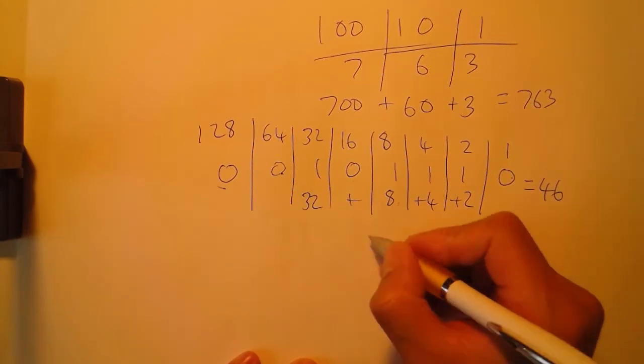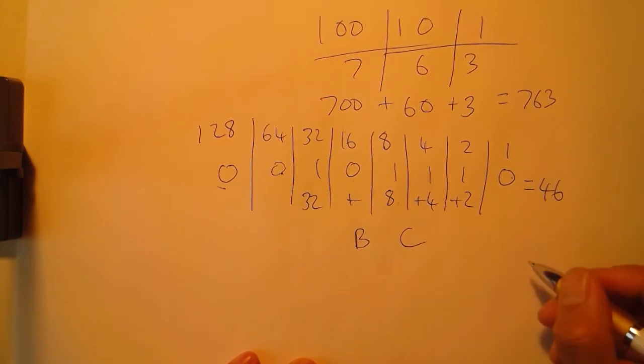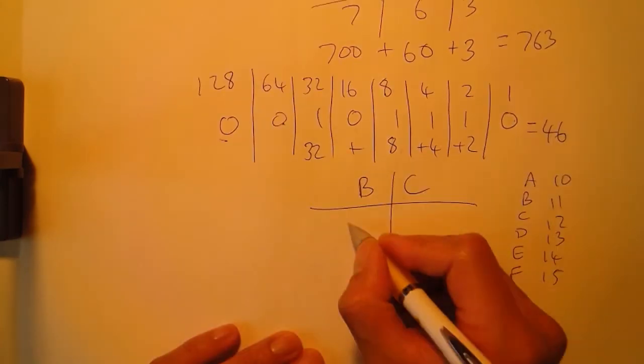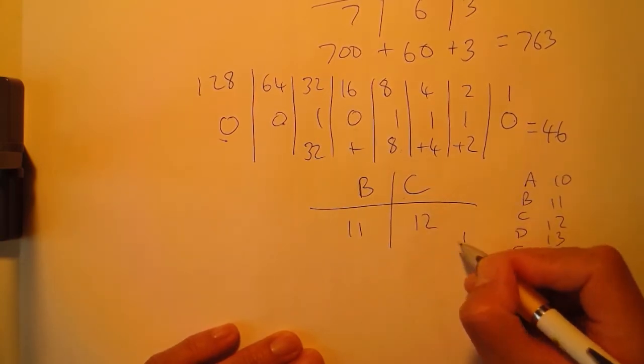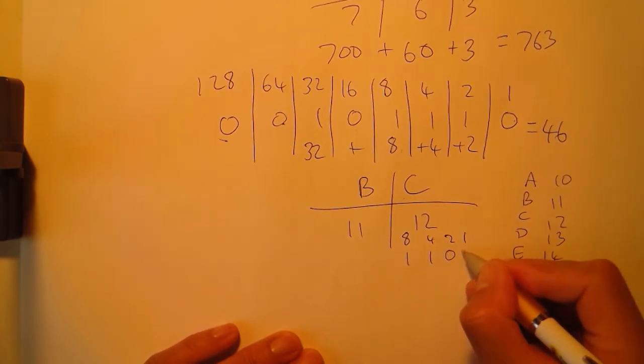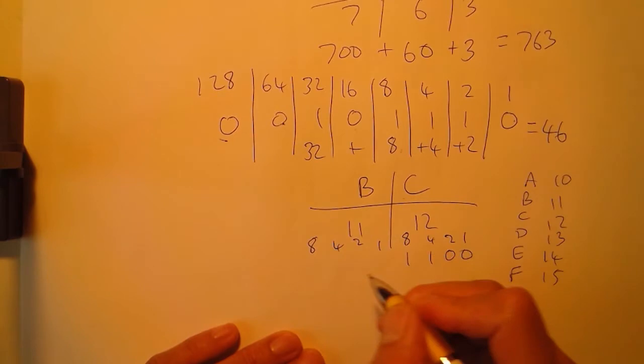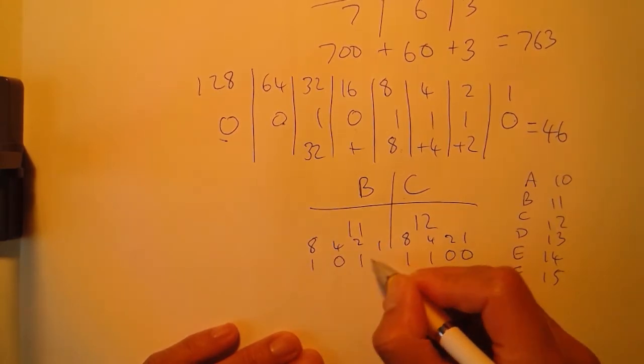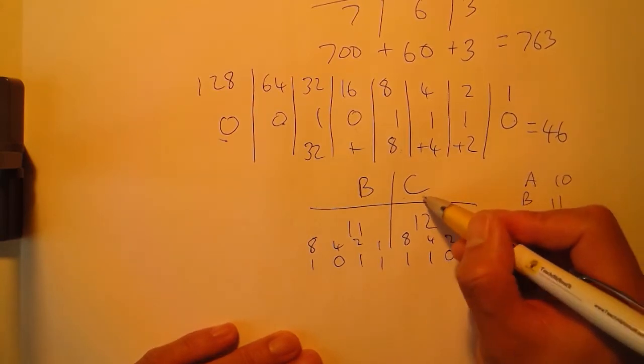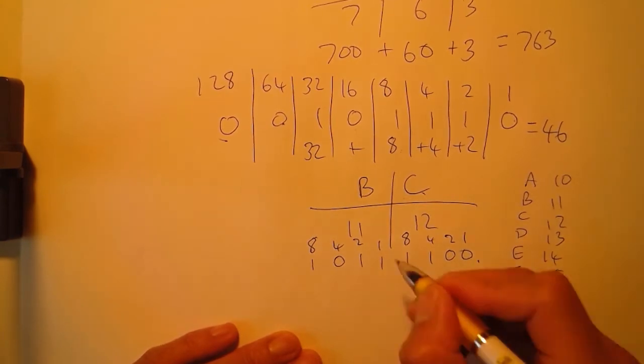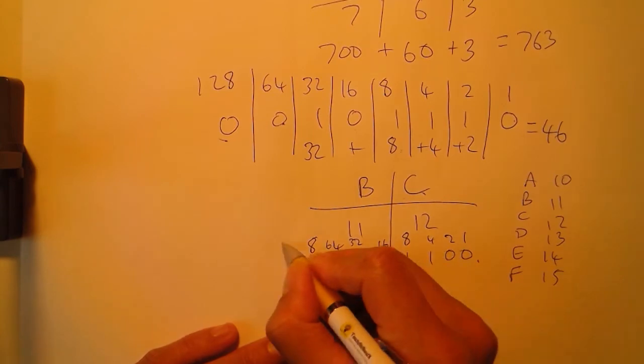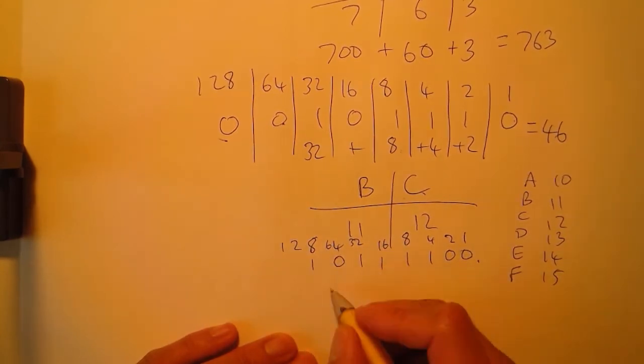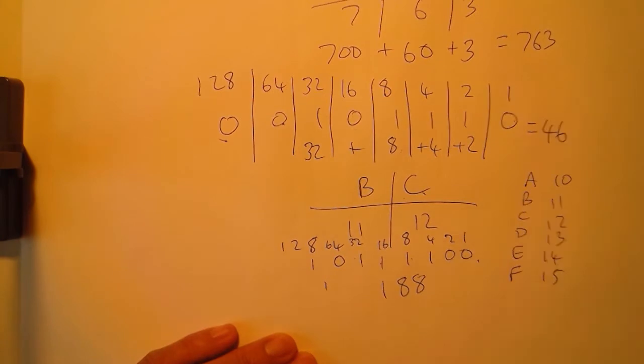With hexadecimal, the best way to work at hexadecimal is to take our value, let's say BC, split it into two. B is 11, C is 12. In binary C is 1100 and 11 is 1011, so that would be my binary value of BC. If I want to work out what the denary value is, I would just change these bases to 128, 64, 32, 16, and we'd go to 160, 176, 184, 188.